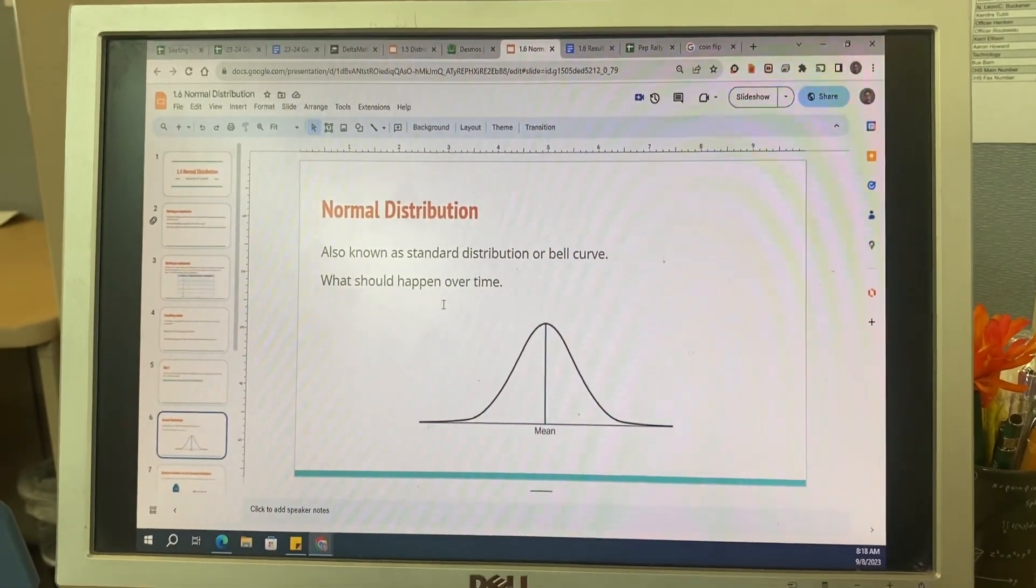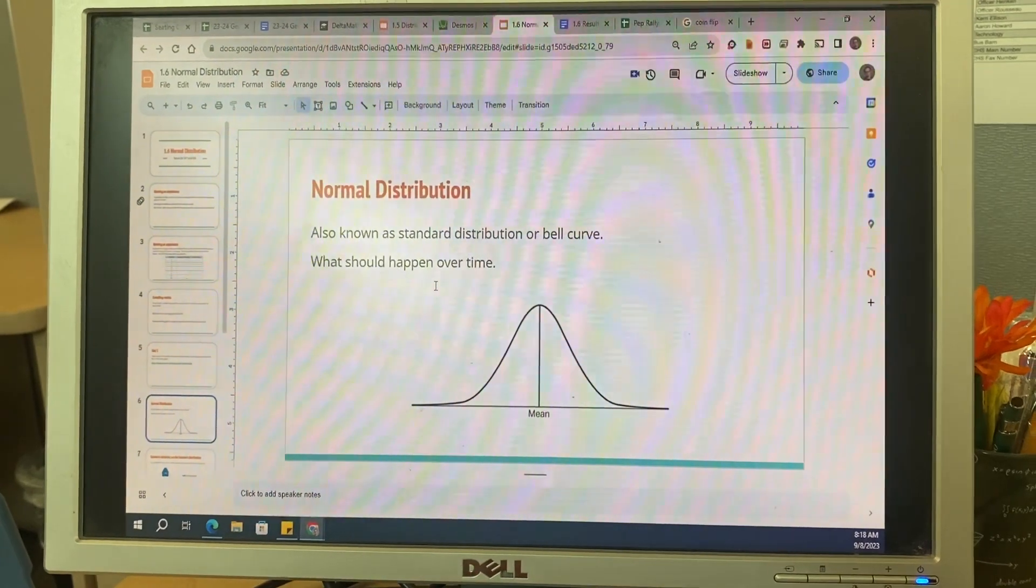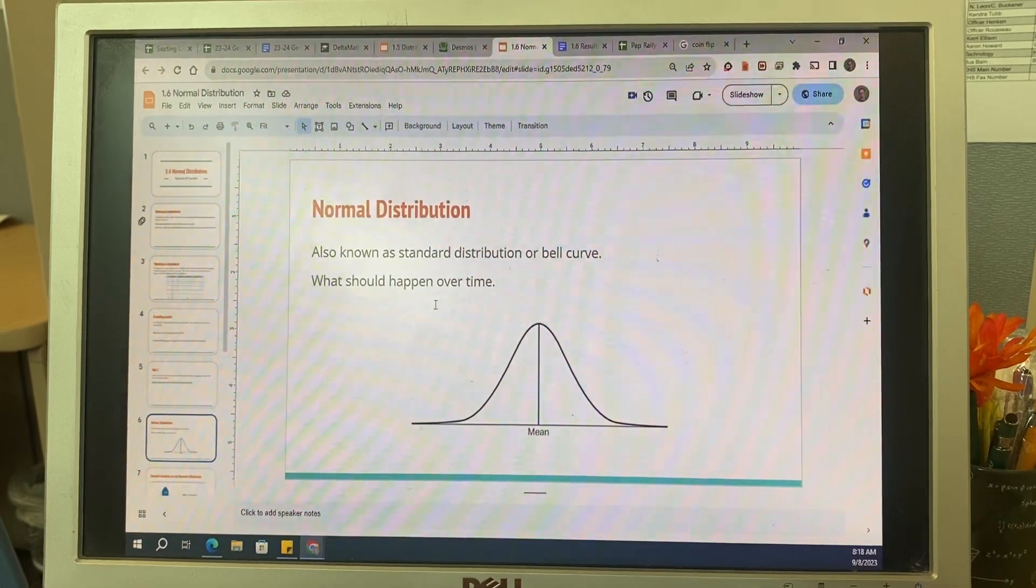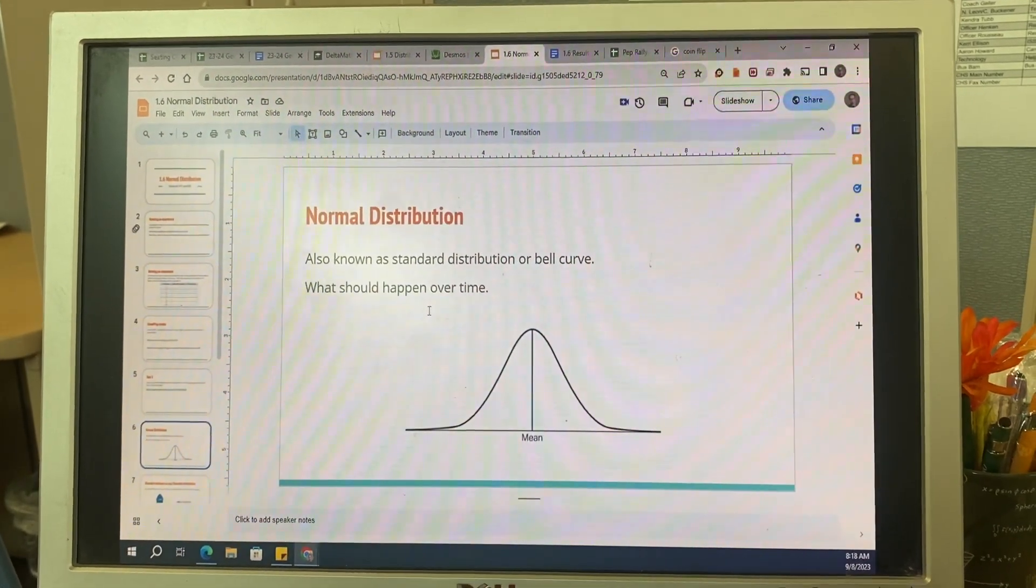So this is a normal distribution. Make sure to add that to your notes. It's also known as a standard distribution or a bell curve. Make sure you write those down.